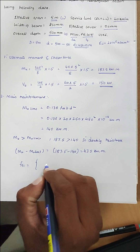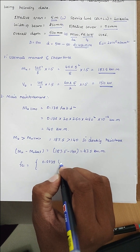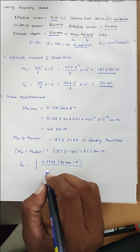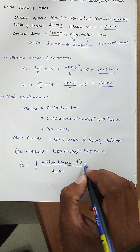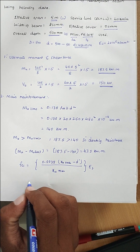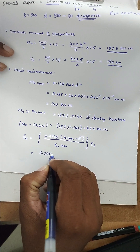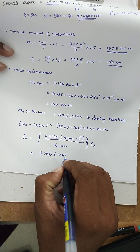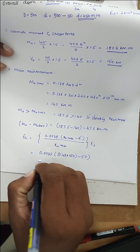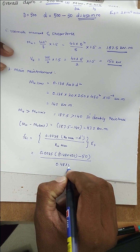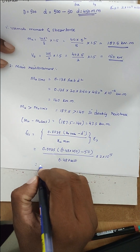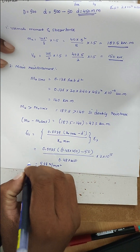Now find the stress in compression steel fsc. The formula is: fsc = 0.0035 × (XU,max − d') / XU,max × Es. Substituting: 0.0035 × (0.48 × 450 − 50) / (0.48 × 450) × 2 × 10⁵. Solving this, we get fsc = 538 N/mm².